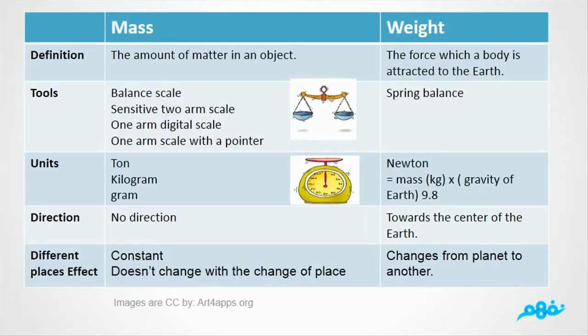Number 3 units. For mass: Ton, kilogram, gram. For weight: Newton. Number 4 direction. Mass has no direction. The weight is towards the center of the Earth.